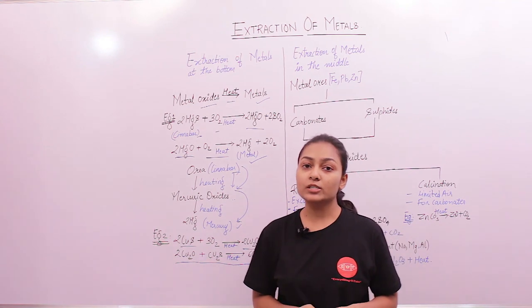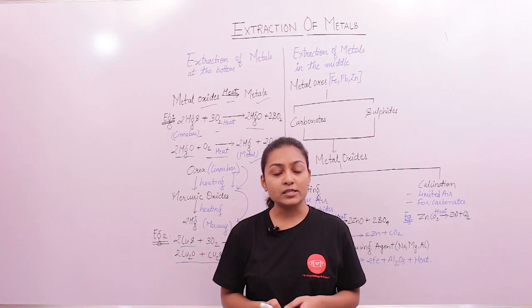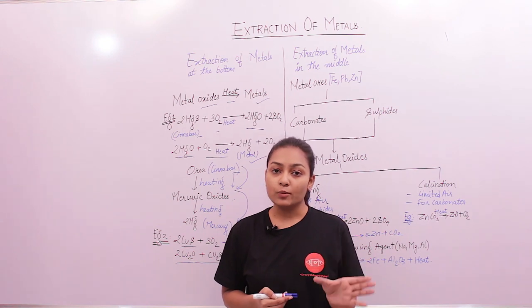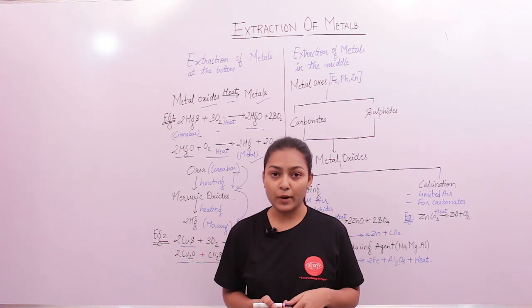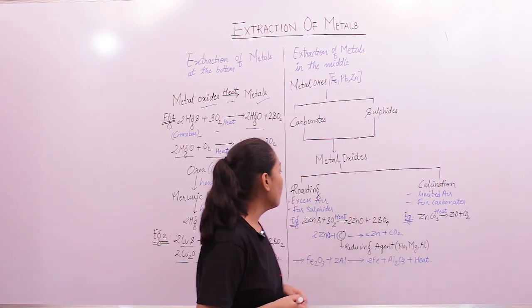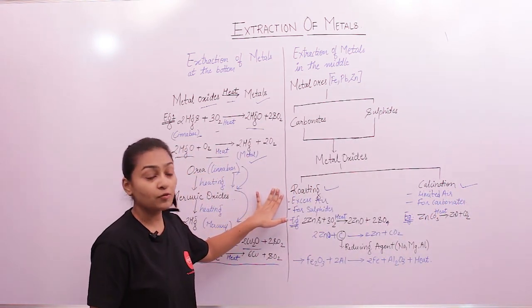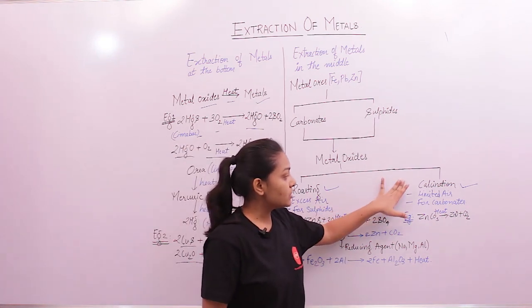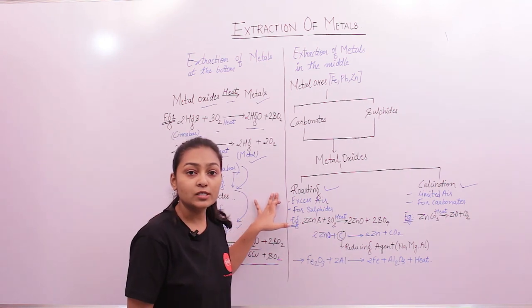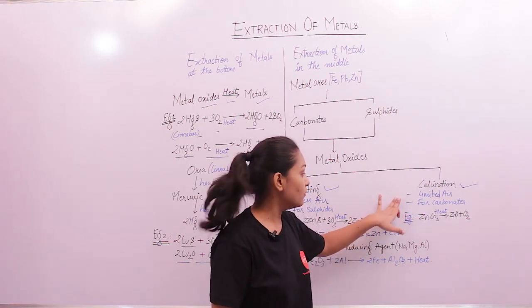Now let's look at the extraction of metals in the middle of the reactivity series. These metals are obtained in their carbonate and sulphide forms, which must first be converted into their metal oxides. We follow two processes: roasting and calcination. Roasting is used for sulphide ores and calcination for carbonate ores. In roasting we heat in the presence of excess air; in calcination we heat in the presence of limited air.